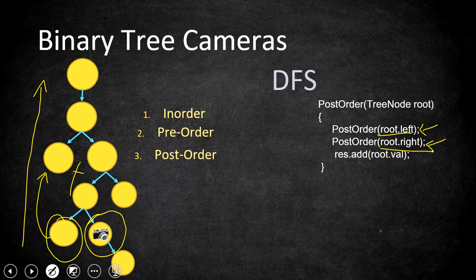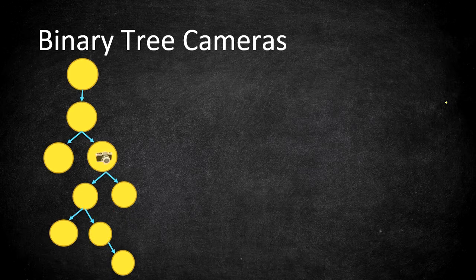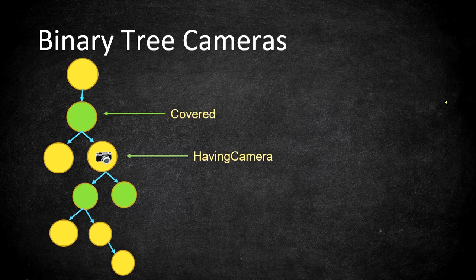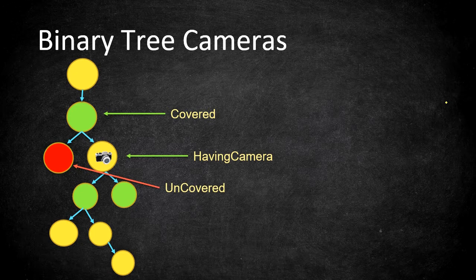We use a basic recursive DFS that visits the left node first, then right, then performs the remaining operations. Instead of just printing values, we assign a status to each node. The DFS tells us the status of left and right children, which determines the parent's status. There are three statuses: having a camera (the node has a camera placed on it), covered (the node is monitored by a neighboring camera), and not covered (the node is not yet monitored).